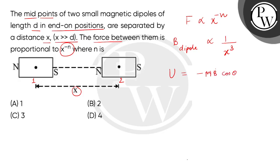Here we hold b, so U is inversely proportional to x cube. Now we have force equals the negative gradient of the energy.